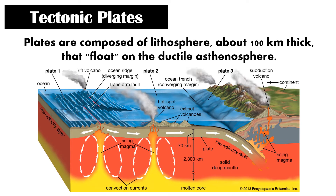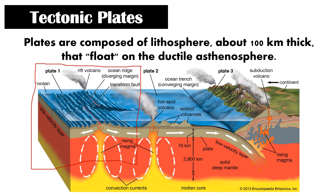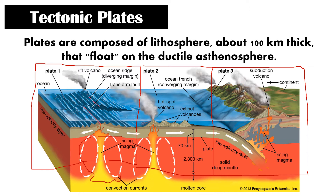If we define plates based on the plate tectonic theory, plates are composed of lithosphere about 100 kilometers thick that float on the ductile asthenosphere. If we look at the cross section of a plate, we can see there are a lot of processes happening at or under the plate itself. A plate could either be a continental plate or an oceanic plate.